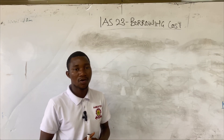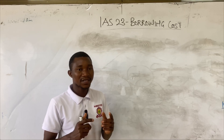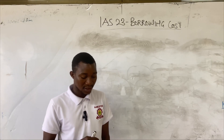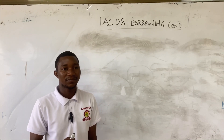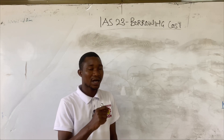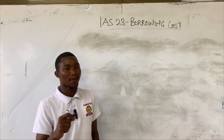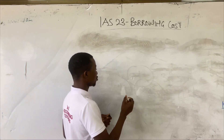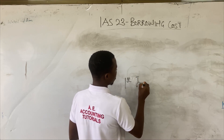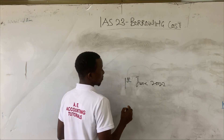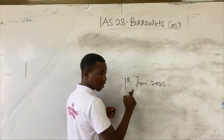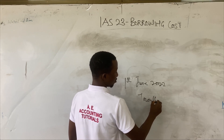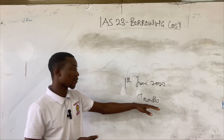In order to solve a borrowing cost question, after you read through the question, the first thing you have to do is look at the commencement date of the construction of the qualifying asset. From this question, the construction begins on 1st June 2022. Remember that we are calculating the borrowing cost for the 2022 financial year, but the construction of the building begins from 1st June 2022, meaning that within the year 2022, the construction only took place for seven months. So we will only calculate borrowing cost for seven months for the year 2022.